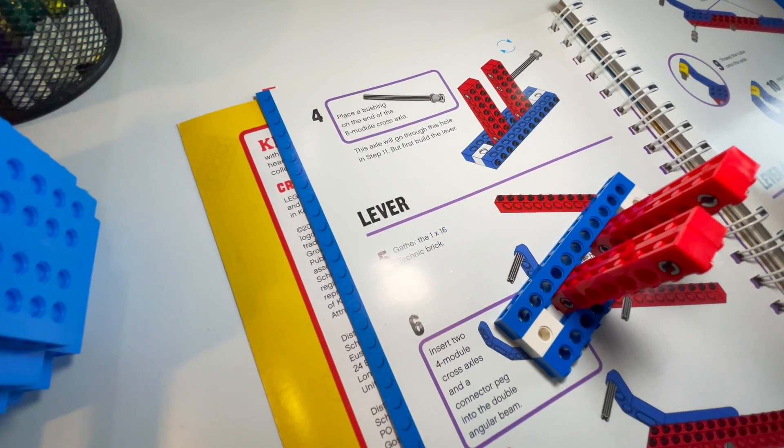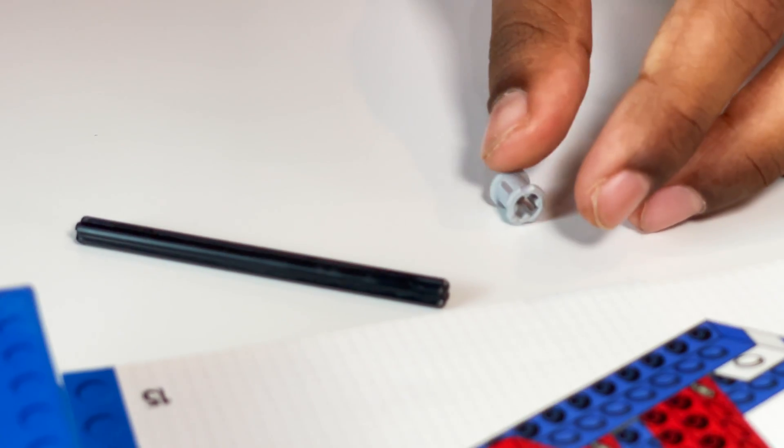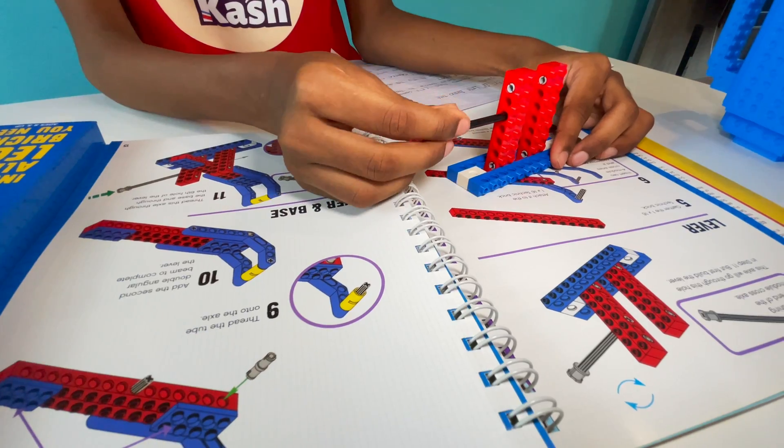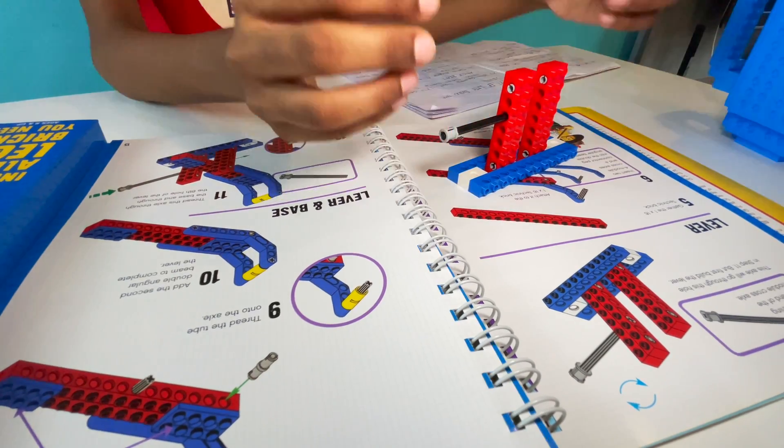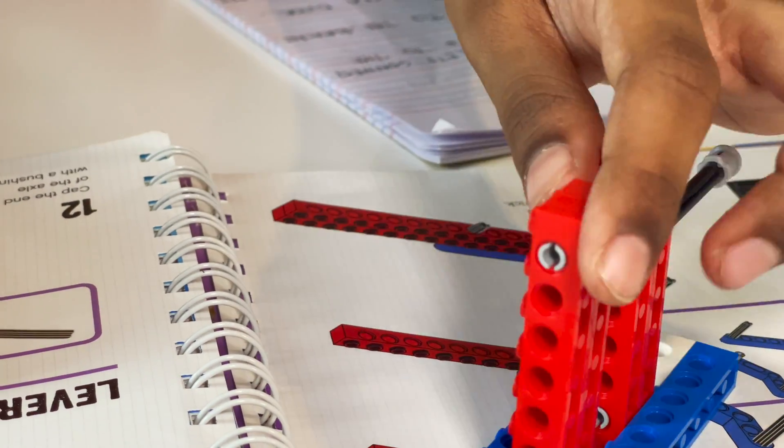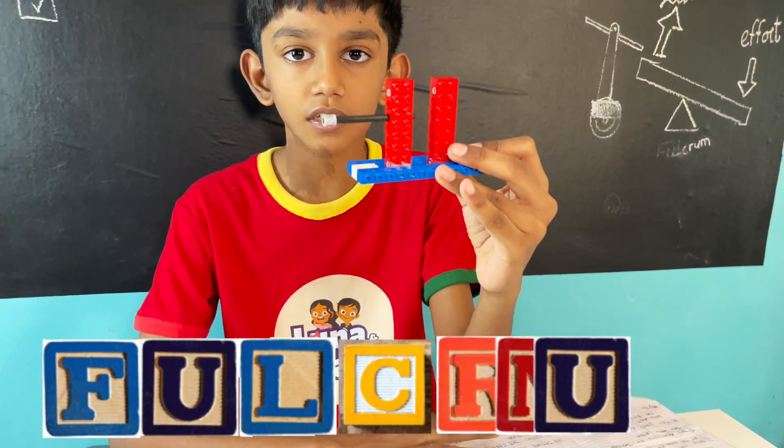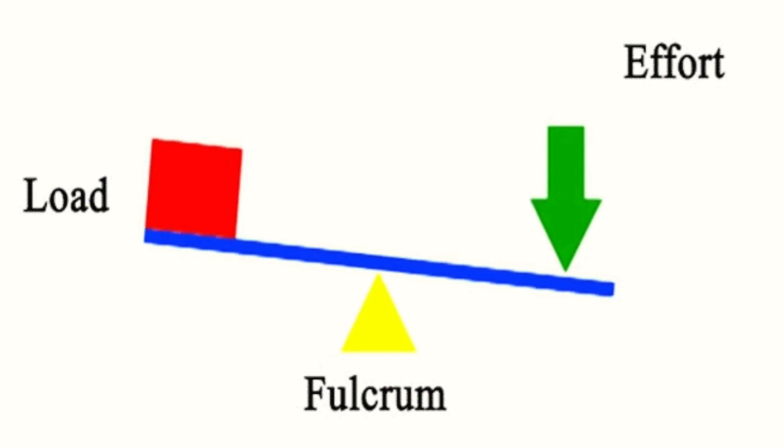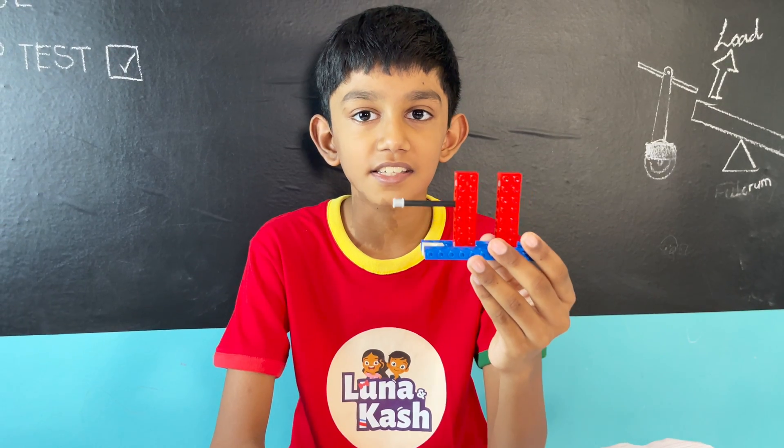Place the axle here just like the picture. Actually, this is a fulcrum, just like the seesaw in the playground.